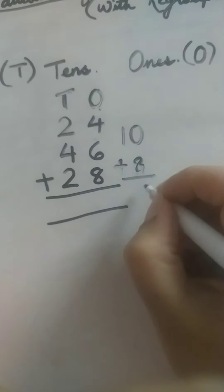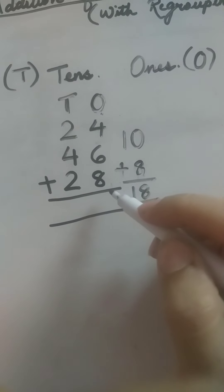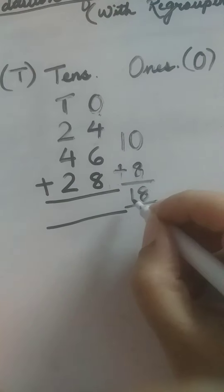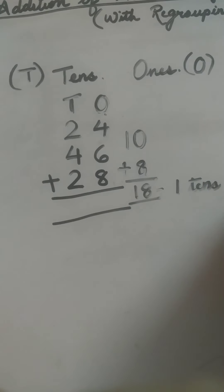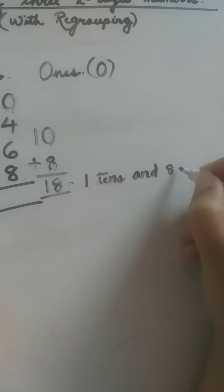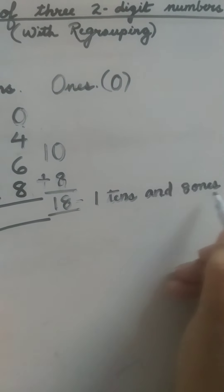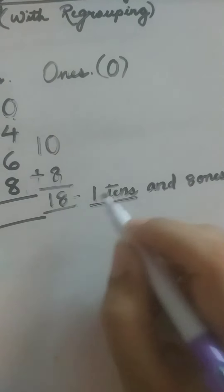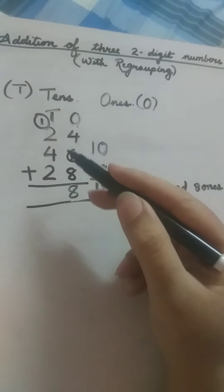The remaining number is eight, so ten plus eight is eighteen. Now, can we write this eighteen in the ones place? No, we cannot write a two-digit number in the ones place. Eighteen has one ten and eight ones. So we will take this one ten to the tens place — we write this one on top as carryover — and write these eight ones in the ones place.